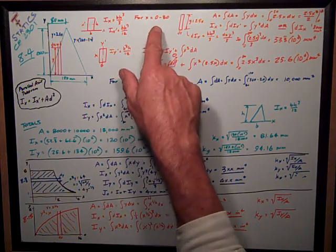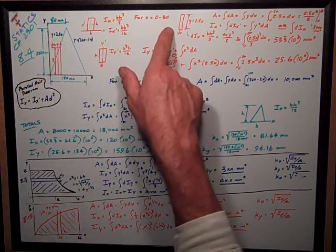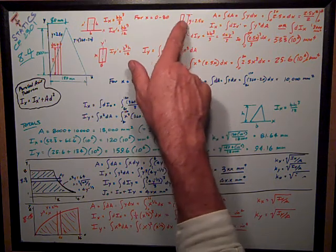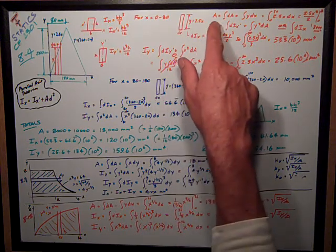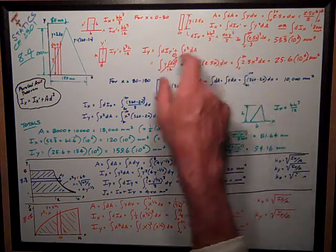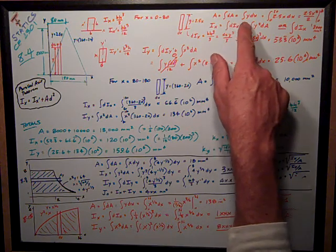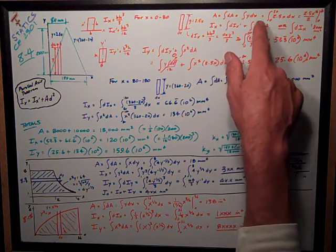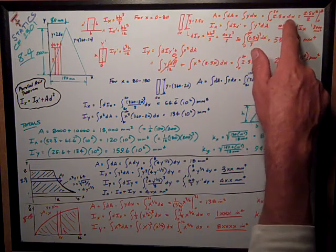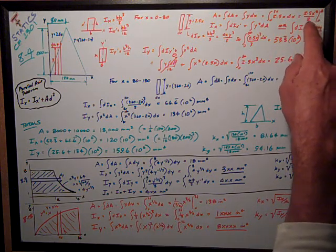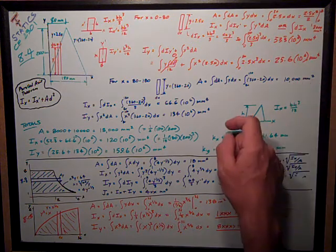For x = 0 to 80, on the left side triangle — if I divide this into two parts — my little element is dx wide and y = 2.5x tall. The area is just the integral of that little strip from 0 to 80. This area is the integral of dA = integral of y dx. Substituting y = 2.5x, I get the integral from 0 to 80 of 2.5x dx. Evaluating: 2.5x²/2 from 0 to 80 = 8,000 mm².